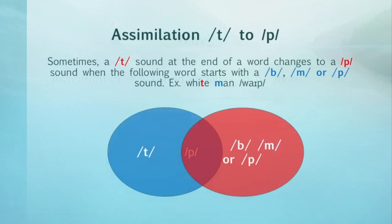First, in English, the final T in words is often not pronounced. And sometimes a T sound at the end of a word, like 'white,' changes to a P sound, like 'wipe,' when the following word starts with a B, M, or P sound.